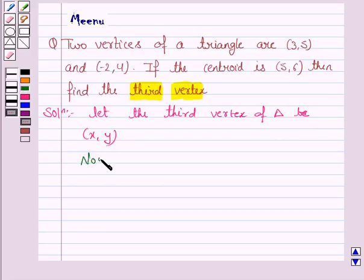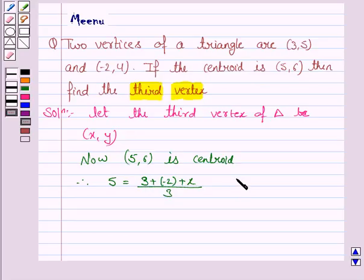Now as (5,6) is the centroid, therefore 5 equals the sum of the x-coordinates of the three vertices, that is 3 plus (-2) plus x upon 3, and 6